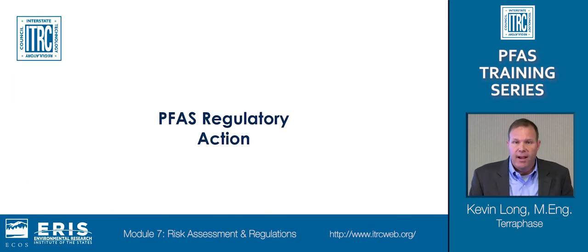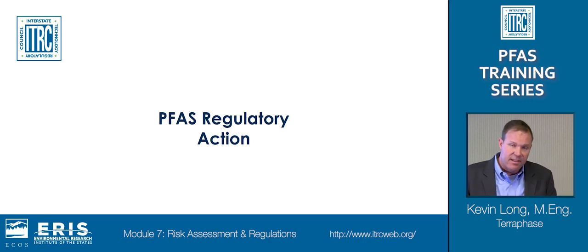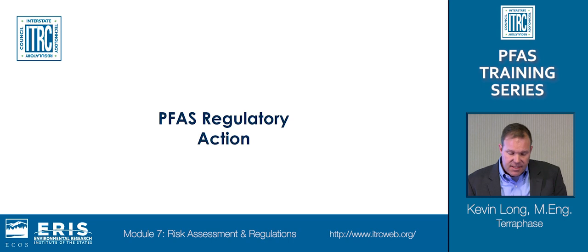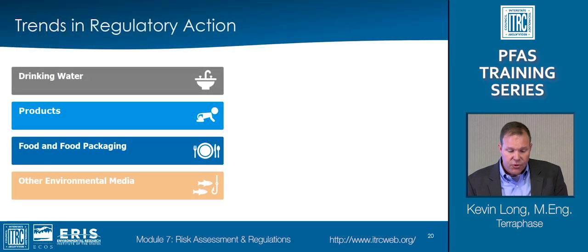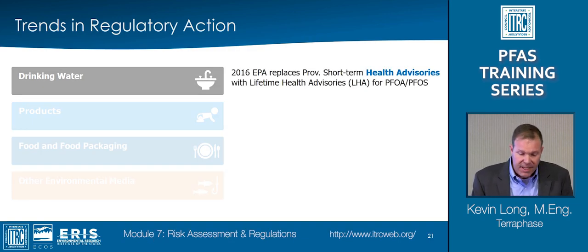Now I'm going to talk about PFAS regulatory action in the United States. As I've just showcased, regulatory agencies are using risk assessment science to support risk management decisions despite some challenges and limitations in our knowledge and understanding of these chemicals. The trends in regulatory action in the United States can be lumped into four different categories: actions to help address concerns regarding PFAS exposure via drinking water, PFAS in products, in food and food packaging, and in other environmental media. Beginning as early as 2006, federal and state agencies have been using risk assessment science to derive risk-based guidelines for PFAS.